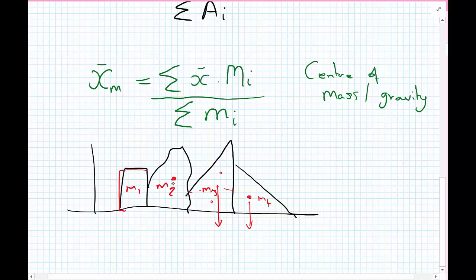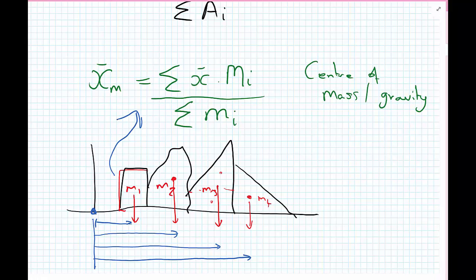If we want the x coordinate, we then have the lever arm from wherever we're taking moments to each of the lines of actions of these weights or masses, and we apply the same procedure as we did for centroids.